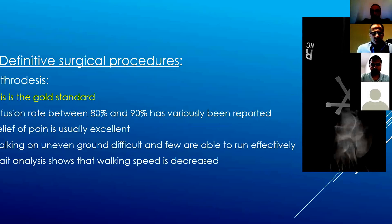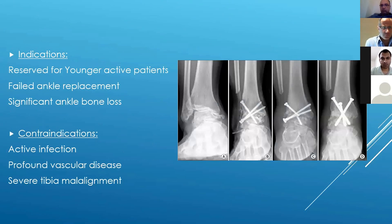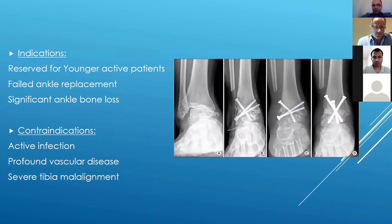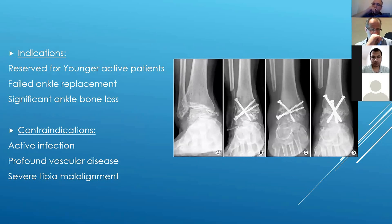There are some problems with ankle arthrodesis. Walking on uneven ground can sometimes cause stumbles, and it can lead to future subtalar arthritis. Gait analysis in labs has shown that walking speed decreases after arthrodesis, but most patients don't notice or care — once the pain is sorted they're very happy. Indications are usually younger active patients, failed ankle replacement, and significant ankle bone loss. In the exam, if you get a 45 or 50-year-old truck driver, going straight to total ankle replacement is probably the wrong route.